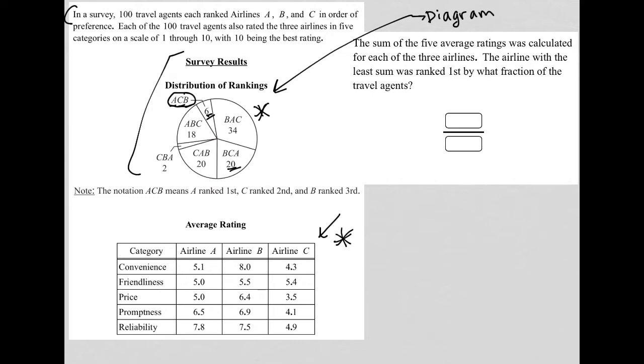20 of the travel agents thought B was best, followed by C, followed by A. The note here just tells us what the notation means. And then we have our average rating across five separate categories: convenience, friendliness, price, promptness and reliability.